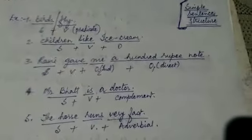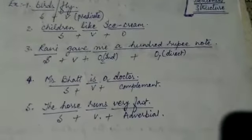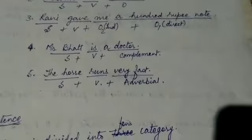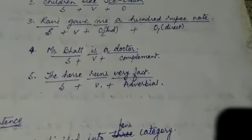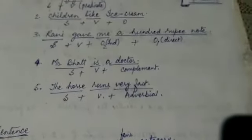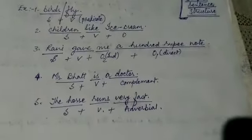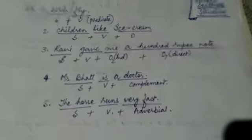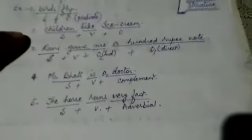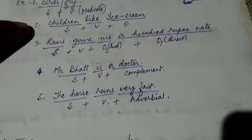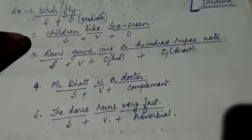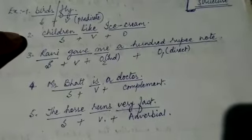Example number four says Mr. Bhatt is a doctor. Here Mr. Bhatt is the subject, is is the verb, and a doctor is a complement. Now some children get confused with what is the object, what is the difference between an object and a complement. So children have to understand this. Whenever we have an action verb, whenever the subject performs some sort of action, the noun or pronoun after the verb is an object, or any word which has the force of noun or pronoun will be the object.